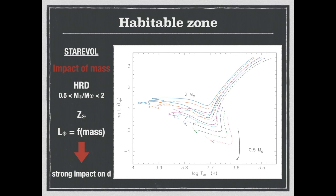I put here the tracks for stars between 0.5 and 2 solar masses that I get from the star-evolv model developed in Geneva by Corinne Charbonnel and collaborators, for the solar metallicity. And as you can see, the luminosity and effective temperatures increased for increasing mass. So this will have a strong impact on the habitable zone limits.